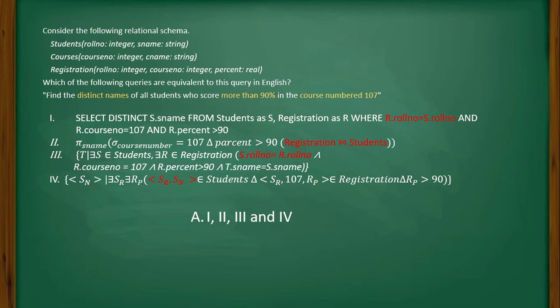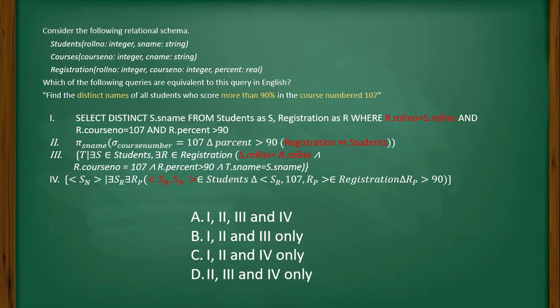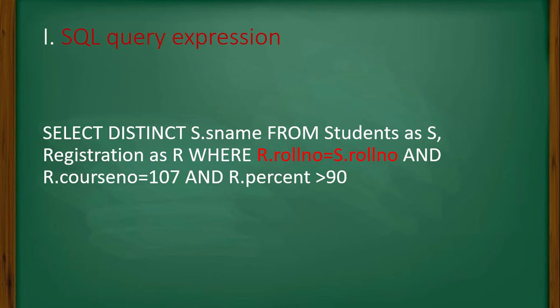Option A is queries 1, 2, 3, and 4 — meaning all four queries do the same thing. Option B is queries 1, 2, and 3. Option C is queries 1, 2, and 4. Option D is queries 2, 3, and 4.